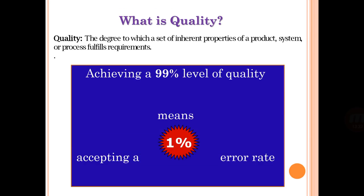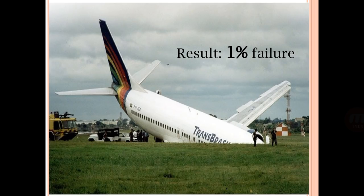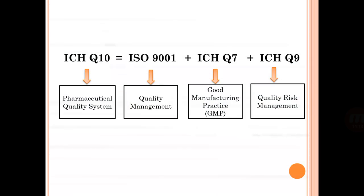Quality is the degree to which the inherent properties of a product, system, or process fulfill requirements. Achieving 99% quality means accepting a 1% error rate. Key quality standards: ICH Q10 (pharmaceutical quality system), ISO 9001 (quality management), ICH Q7 (good manufacturing practice), and ICH Q9 (quality risk management). These are also important for multiple choice questions in examinations.